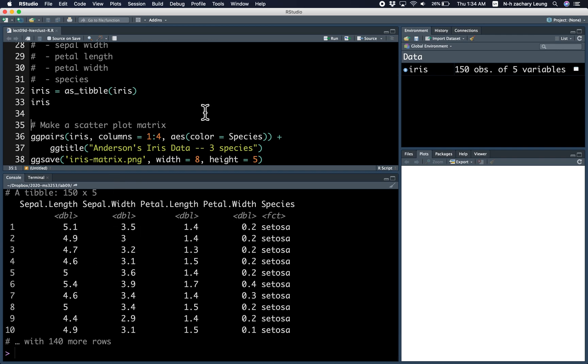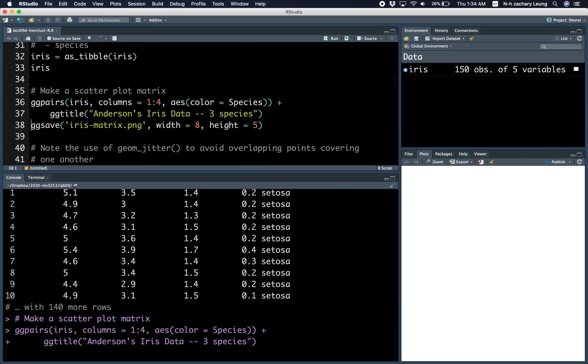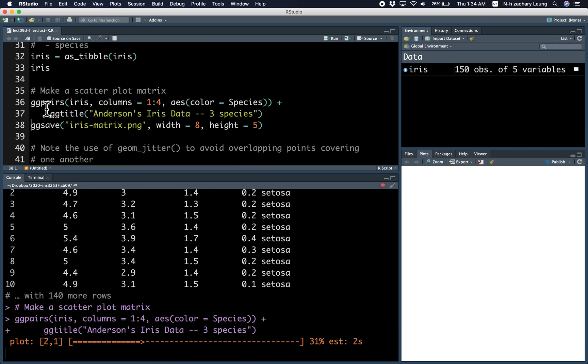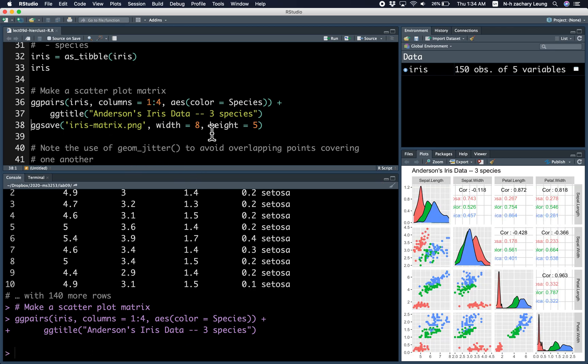Here's how you make a scatter plot matrix using the ggpairs function. It takes a little bit of time to load, but there you go.